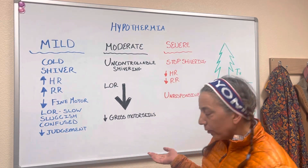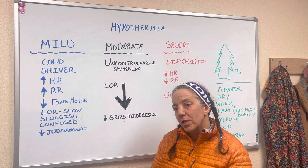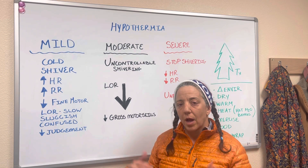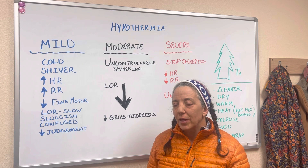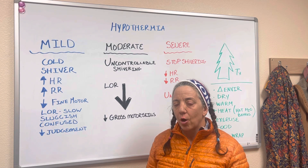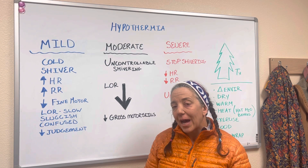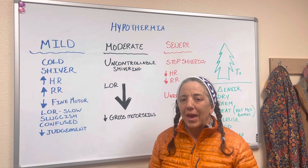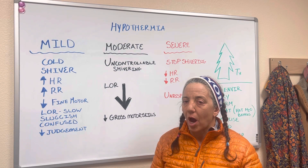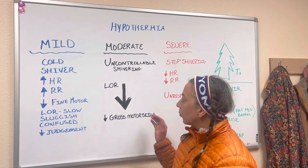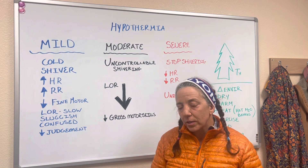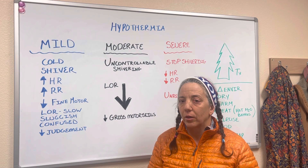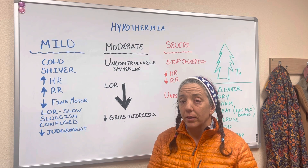The moderate patient is someone who is uncontrollably shivering. Their level of responsiveness has dropped so much that they really cannot help themselves. They're not able to drink or eat at this point, and asking them to exercise would be unrealistic. Their gross motor skills are dropping and they're probably fumbling and stumbling around. This person definitely needs help.